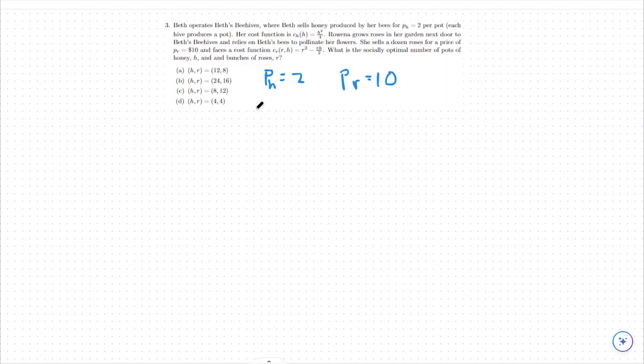We also know the cost function associated with honey, which is going to be h² over 4. And then we know the cost function also associated with producing roses. And here's where the positive externality lies. We're seeing an R² as our cost for roses, and then we're also subtracting the number of roses times the number of honey pots produced divided by 2.